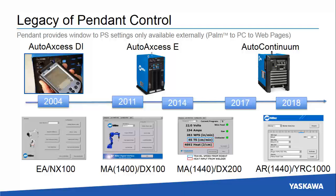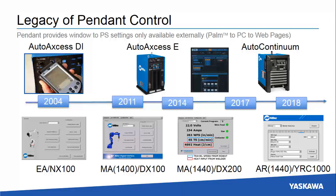Technology has changed with Miller adding Ethernet communication and InSight CenterPoint arc monitoring. Web pages are used for power source setup. Yaskawa has introduced different robot controller configurations, but each has had the same high level interface functionality with the addition of new functions as available.